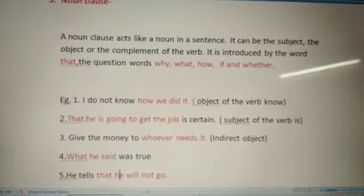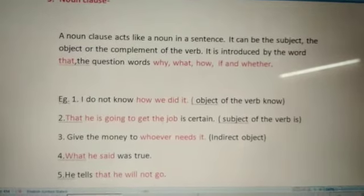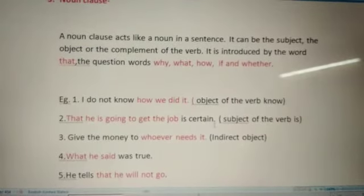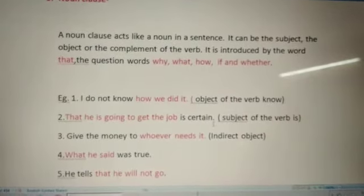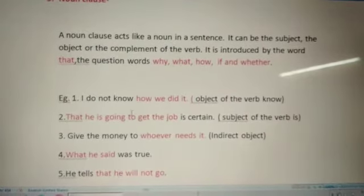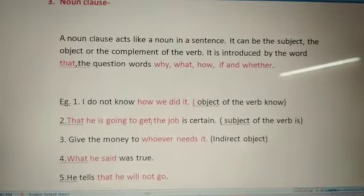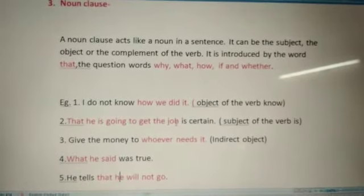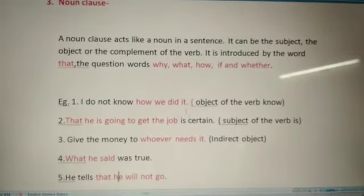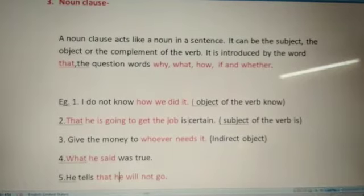Second example: 'that he is going to get the job' is certain. Now here, 'that he is going to get the job' is the noun clause, and it is the subject of the verb 'is'.